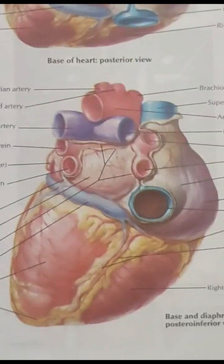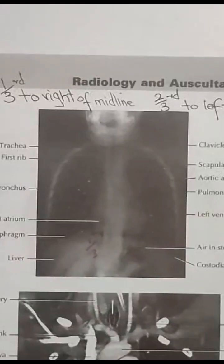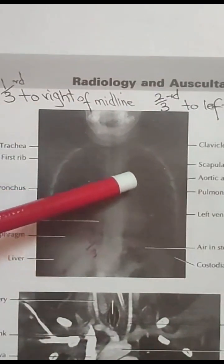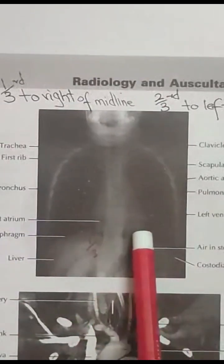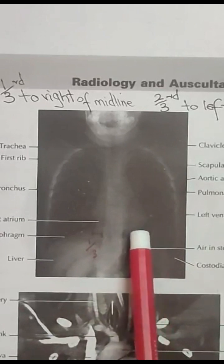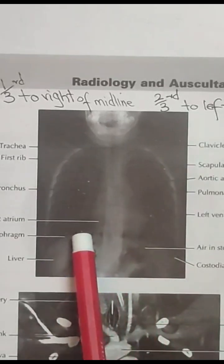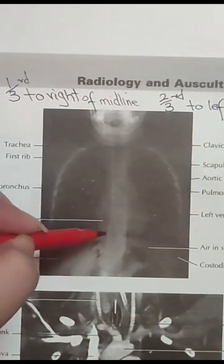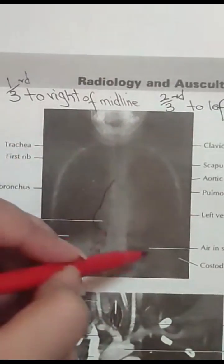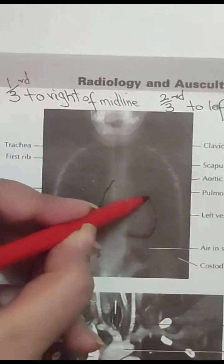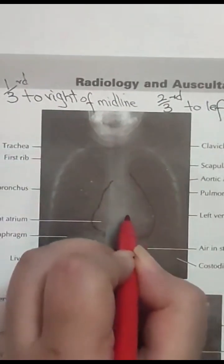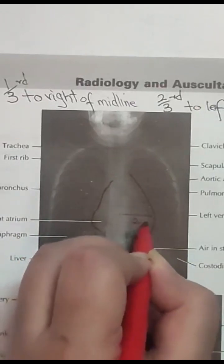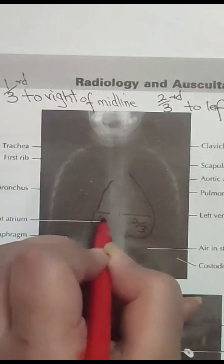The heart is conical in shape, as you can see in this picture, and it lies in the middle mediastinum. This radiograph also shows the heart as conical in shape in the middle mediastinum, where two-thirds of the heart is to the left of the midline and one-third is to the right of the midline.